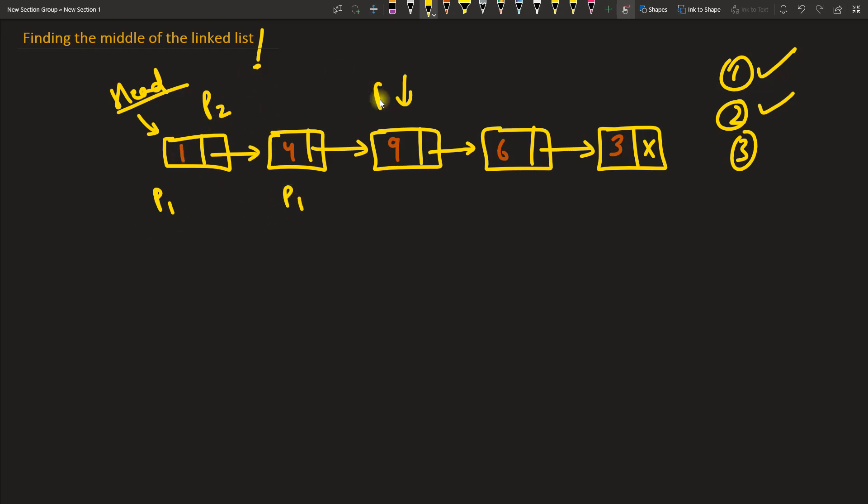p1 will reach here but p2 will go here. So it's like a direct jump and this will be like one by one. Now p2 is here, p1 is here. p2 will go from here to here, p1 will go from here to here.